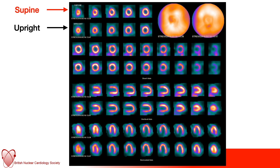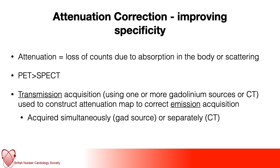The other thing we can do is reposition the patient. Here the top row shows the supine position and the bottom row the upright position, with short axis images running apex to base left to right, followed by vertical and horizontal long axis views. There is a subtle reduction in counts in the basal and mid anterior wall clearly visible on the left-hand bullseye in the supine position, but once the patient is moved upright that disappears entirely. By definition this is attenuation — likely breast attenuation in this lady — which has resolved with the upright position. Attenuation correction using a transmission acquisition — either from an external gadolinium source or CT — constructs an attenuation map to correct the emission acquisition and does improve specificity.